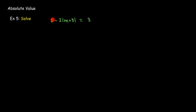So I have to get the absolute value part by itself to isolate the absolute value m plus 3. And I'll do that by subtracting 5 from each side.